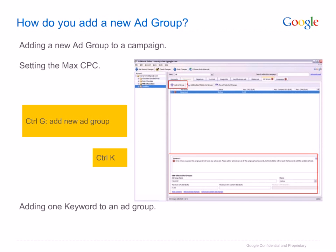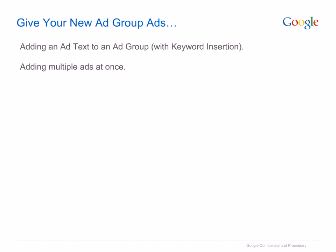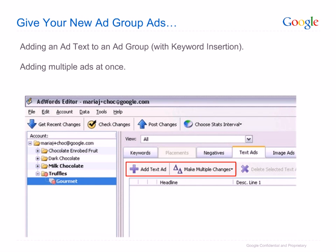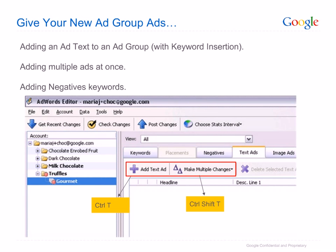Press Ctrl K to add a keyword to this ad group. You can generate a list of keywords using the AdWords keyword tool. Press Ctrl Shift K to add multiple keywords to this ad group. To add an ad text to this ad group, click on the Add Text Ad button at the ad group level. It is possible to add multiple ad texts at once by clicking on the Make Multiple Changes button. For a shortcut to add new ad texts, press Ctrl T. To add multiple new ad texts, press Ctrl Shift T. If you wish to add negative keywords, press Ctrl M. To add multiple negative keywords, press Ctrl Shift M.